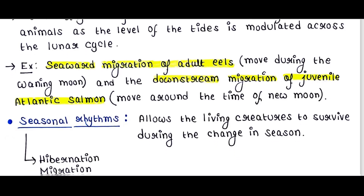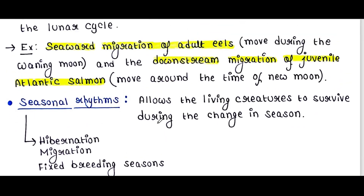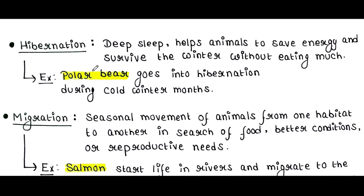Next is seasonal rhythms. Seasonal rhythms are the mechanisms that allow living creatures to survive during changes in season. Examples include hibernation, migration, and fixed breeding season. Hibernation is a deep sleep that helps animals save energy and survive the winter without eating much. For example, the polar bear goes into hibernation during the cold winter months.